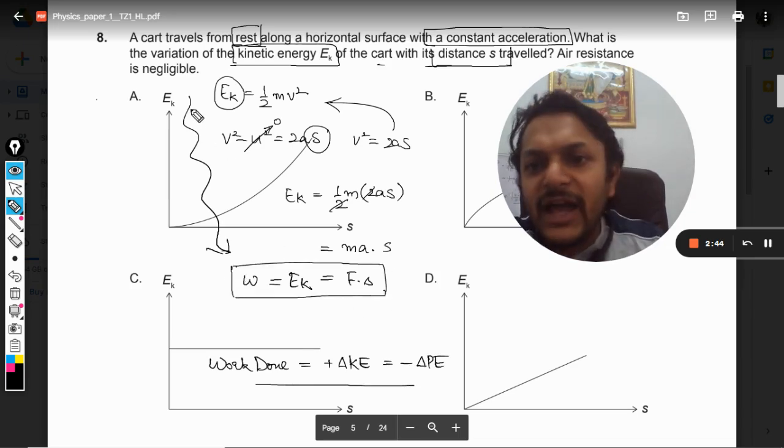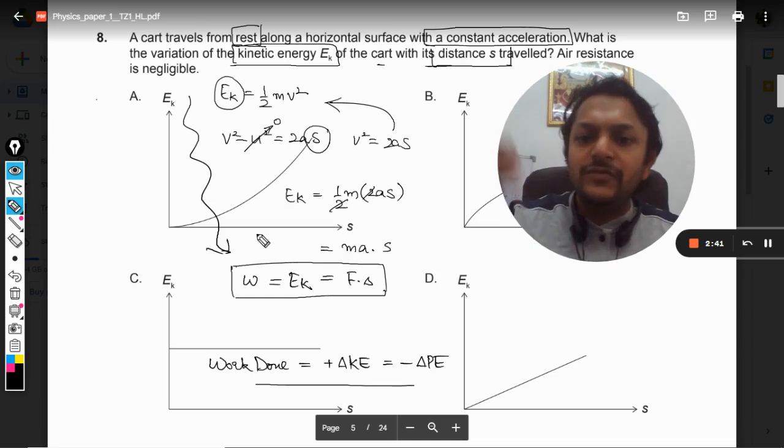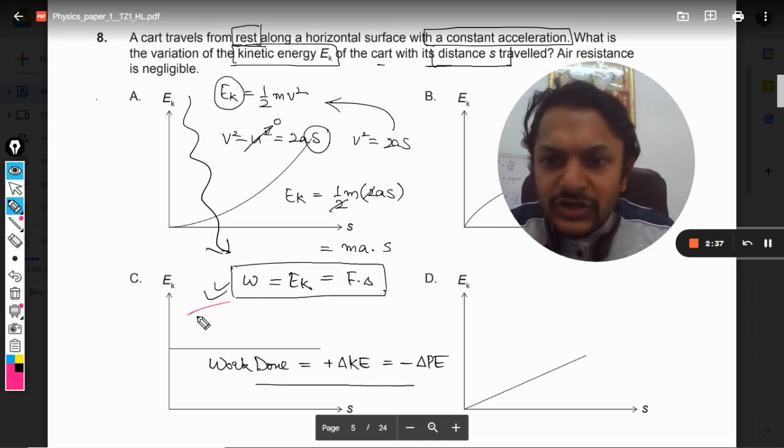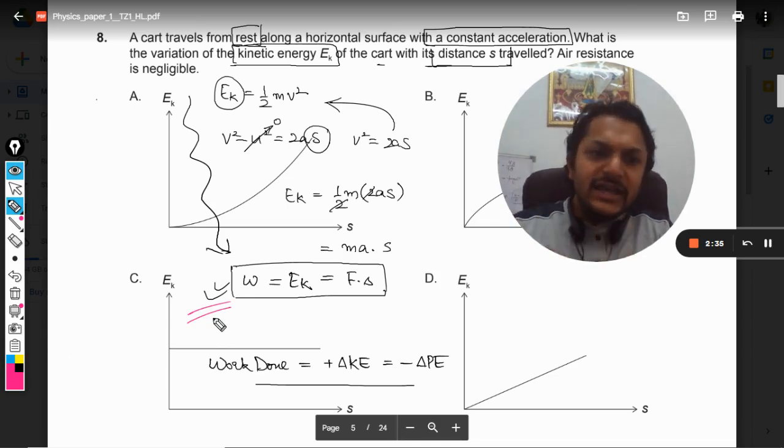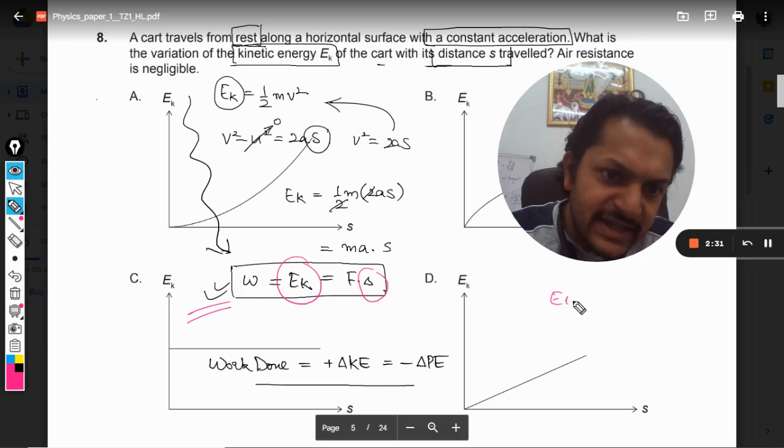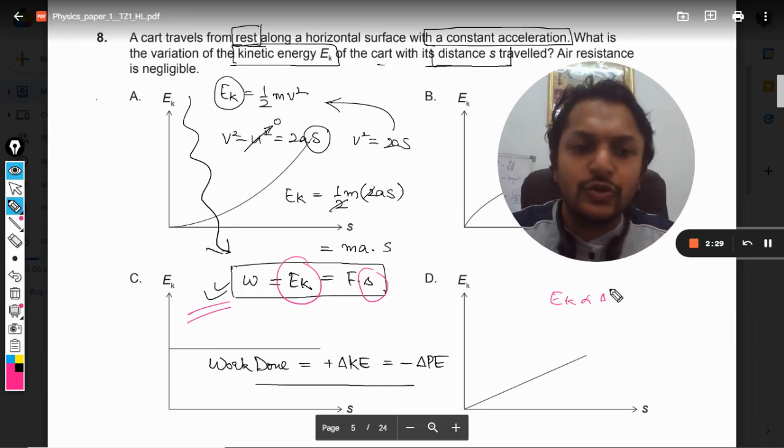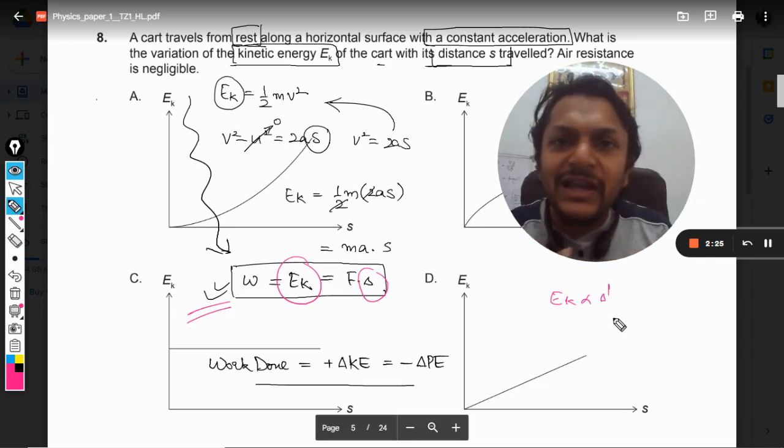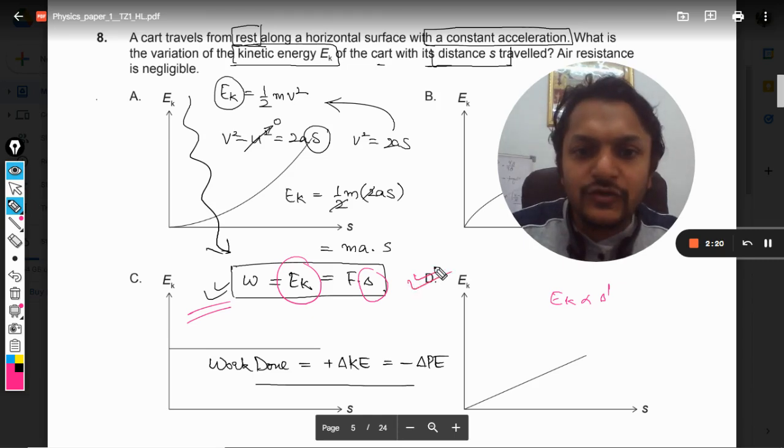Now if we concentrate here that Ek and s, so I can always say that Ek is directly proportional to s raised to power 1. So it is going to be a straight line and that even with positive inclination. So our answer will be D.